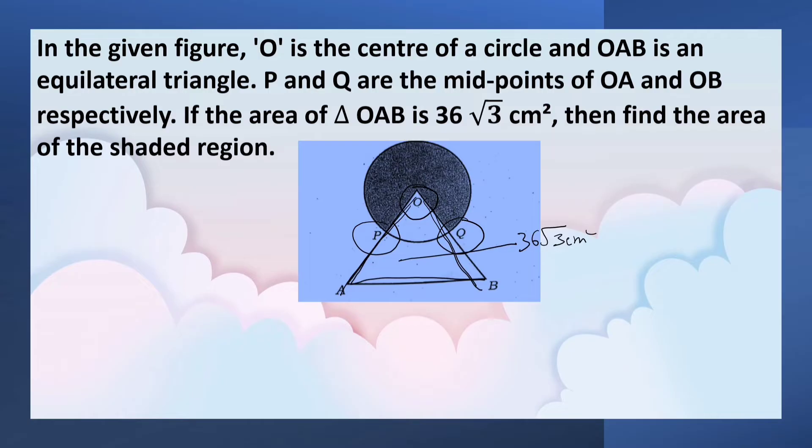From the figure, we can understand that we can find the area of the shaded region by subtracting area of the sector OPQ from the area of the circle. To find the area of the sector as well as area of the circle, we need radius which is OP and OQ.